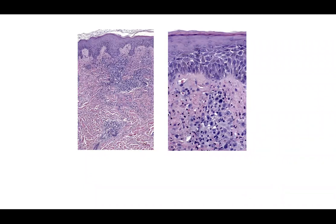We're going to continue with our unknowns. What's the inflammatory pattern here? It's mostly lymphocytic — in the dermis, at least the superficial dermis, maybe a little mid, perivascular or even periadnexal lymphocytic inflammation. Anytime you get lymphocytic inflammation in the dermis, you have to ask yourself: is it truly inflammation, is it neoplastic, or is it a mix of the two?